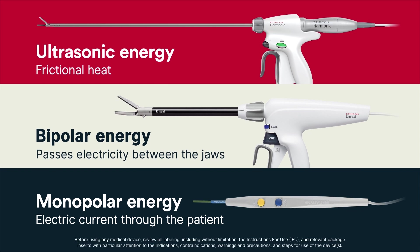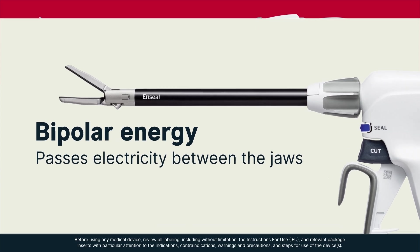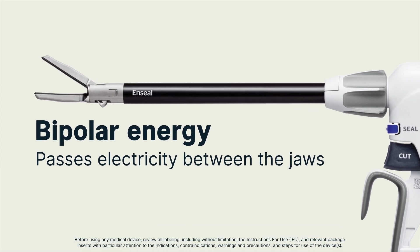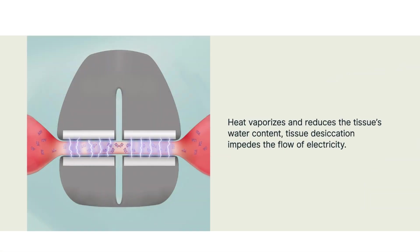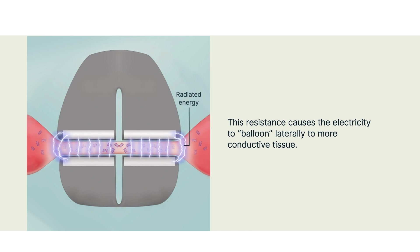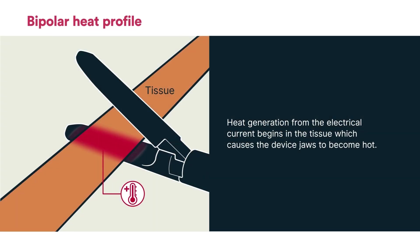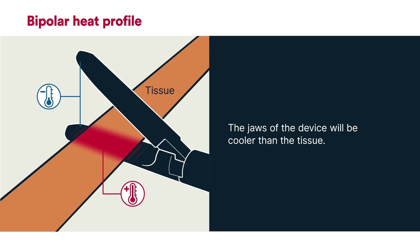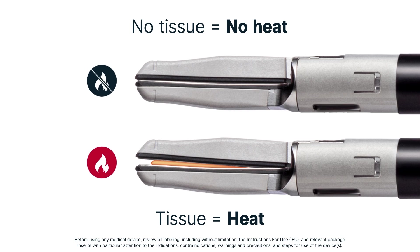Bipolar Device Heat Profile. All energy devices intended to coagulate and seal vessels use a form of heat to achieve the desired tissue effect. However, only bipolar devices pass electricity between its jaws to heat the targeted tissue, which is different from monopolar devices that pass electricity through a patient's body, and ultrasonic devices, which use friction to generate heat. As heat vaporizes and reduces the tissue's water content, tissue desiccation impedes the flow of electricity. This resistance causes the electricity to balloon laterally to more conductive tissue, following the path of least resistance — referred to as radiated electrical energy. With bipolar devices, heat generation from the electrical current begins in the tissue, which causes the device jaws to become hot. If measured immediately at the end of the sealing cycle, the jaws of the device will be cooler than the tissue. Activating the instrument when not in contact with tissue or fluid will not generate heat.